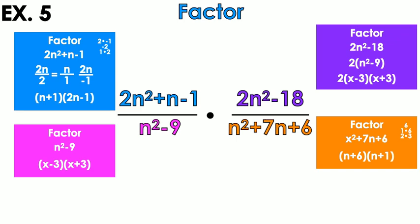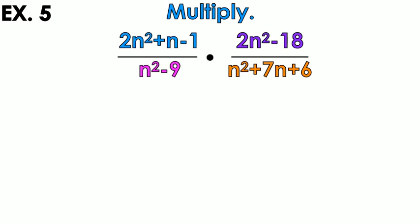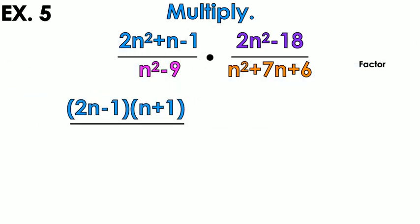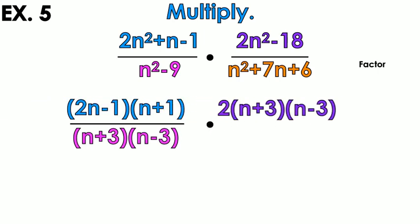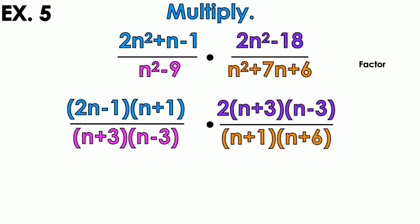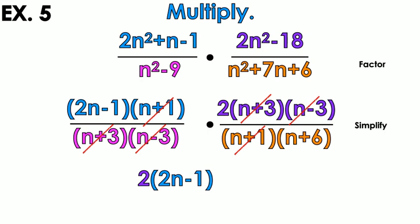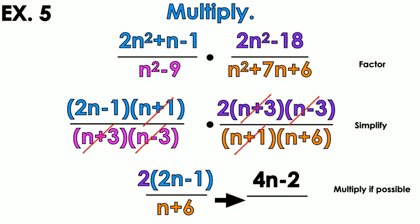Now that everything is factored, I put it all back into the problem and cancel common factors. n plus 1 and n plus 1 simplify out. n plus 3 and n plus 3 simplify out. n minus 3 and n minus 3 simplify out. What remains is the purple 2 and the blue quantity 2n minus 1 on top, over n plus 6 on the bottom. Multiplying: the final answer is 4 times the quantity n minus 2, all over n plus 6.